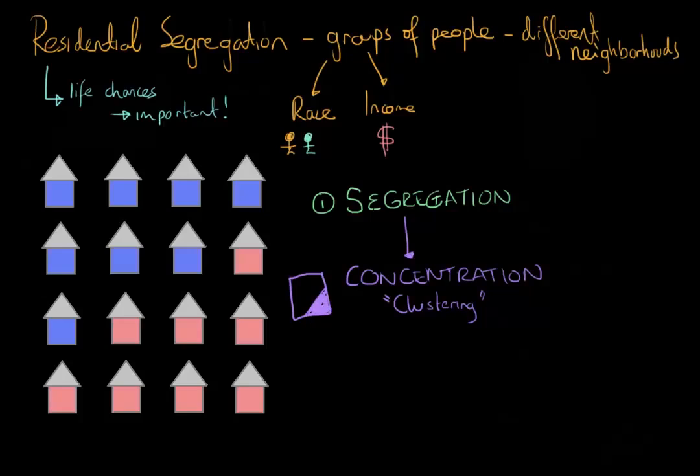Now, what if you had segregation and concentration, but the clustering actually occurred right in the center of a geographic area or a metropolitan area? That would actually be called something a little bit different. That would actually be called centralization. So centralization is segregation plus clustering in a central area.